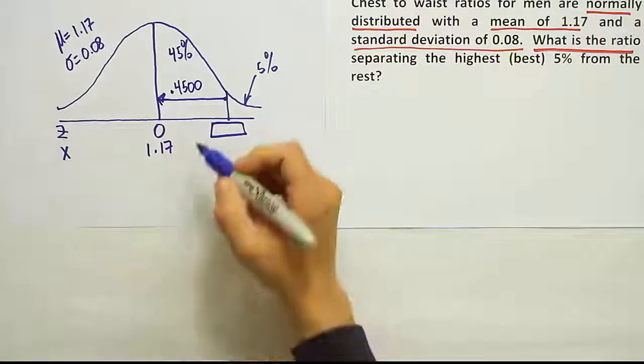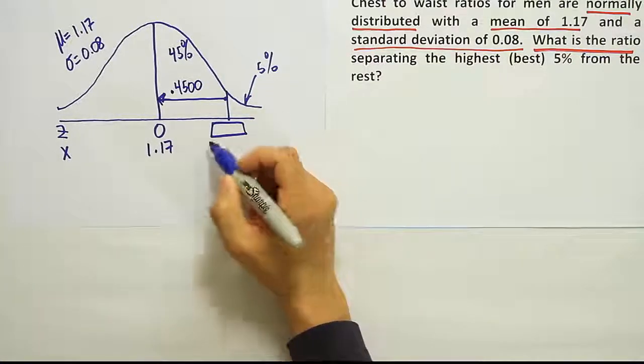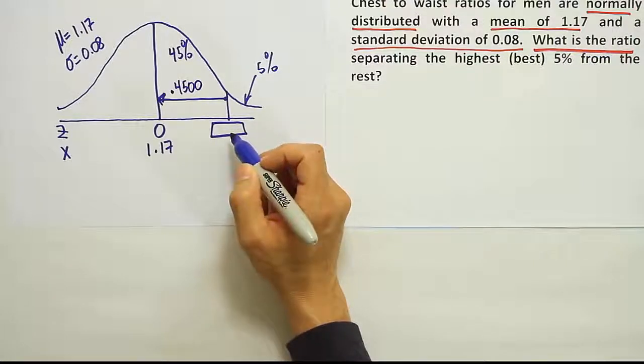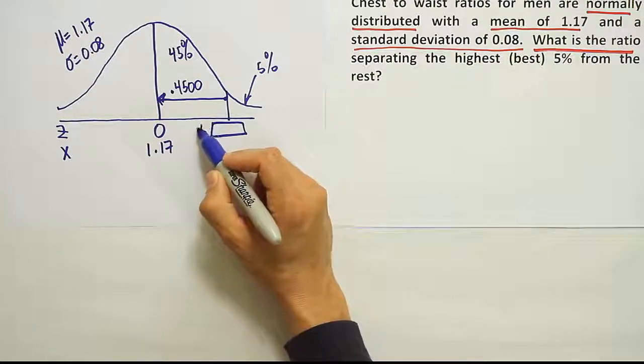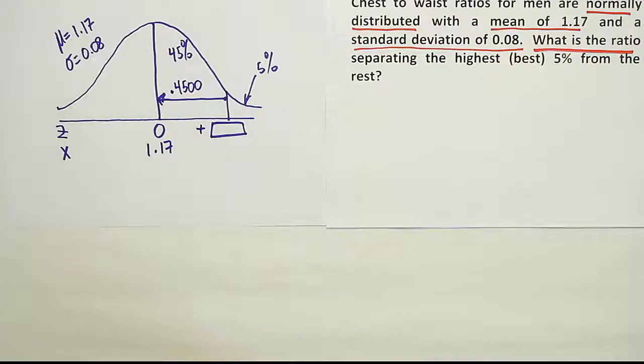Before we go there, we should always identify whether it should be positive or negative, because the table always gives us positive by default. In this case, that's okay because we're on the right-hand side of zero, so it's going to be positive. Let's go to the table and look up 4500 and see what we get.